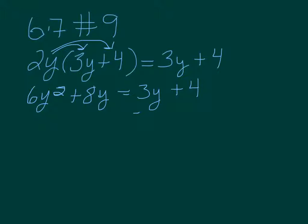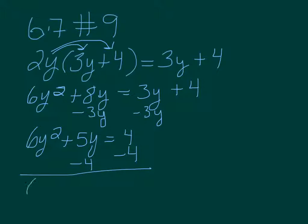Then we're going to subtract 3y on both sides. We need to get one side equal to 0, so I'm going to set the right side equal to 0. So we get 6y squared plus 5y equals 4. Now we need to subtract the 4 over. The 4 doesn't have anybody to subtract it from, so we just subtract it from the whole problem. So it's 6y squared plus 5y minus 4 equals 0.